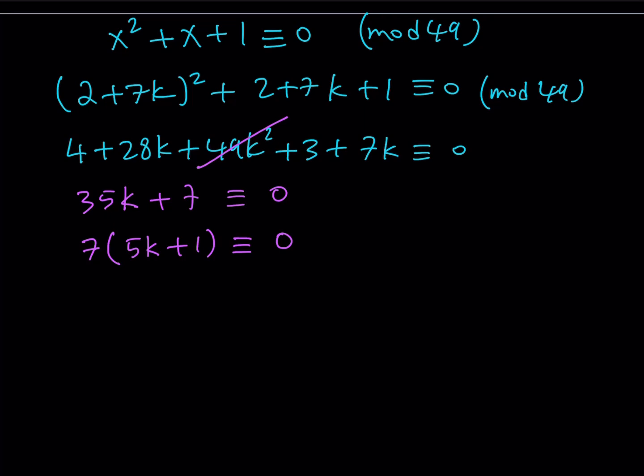Now, what is that supposed to mean? We have 7 times something. And the result is a multiple of 49. Therefore, 5k plus 1 needs to contain a 7, right? In other words, this means that 5k plus 1 needs to be 0 mod 7. So that way, you're multiplying two numbers, 7 times 7. And that becomes 49, which is 0 mod 49. This is an important result because now we can turn this into an equation.